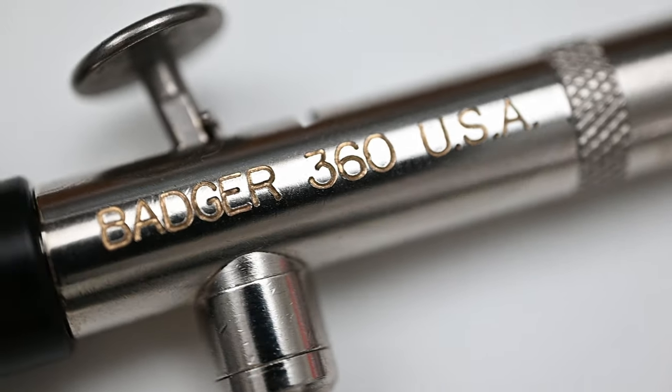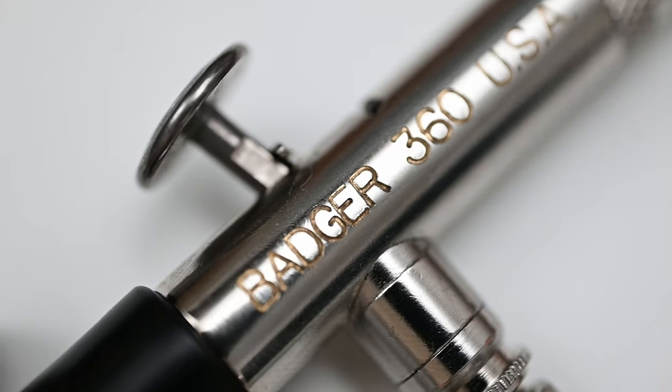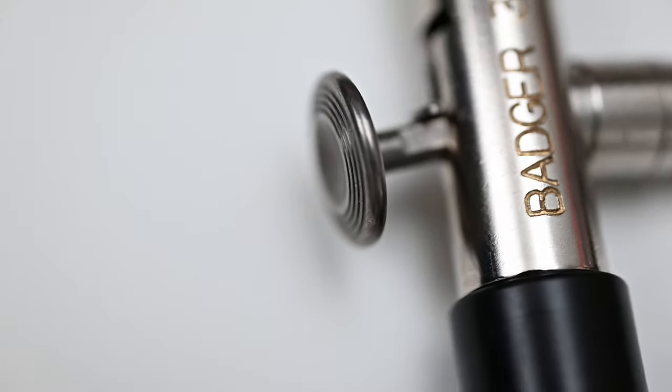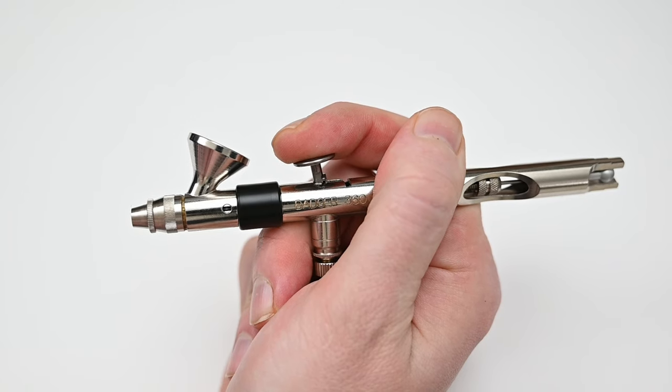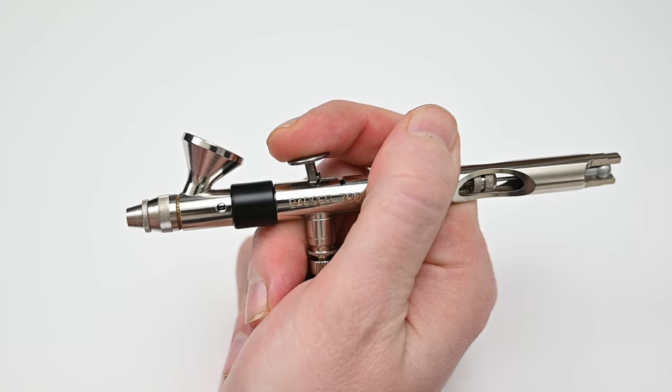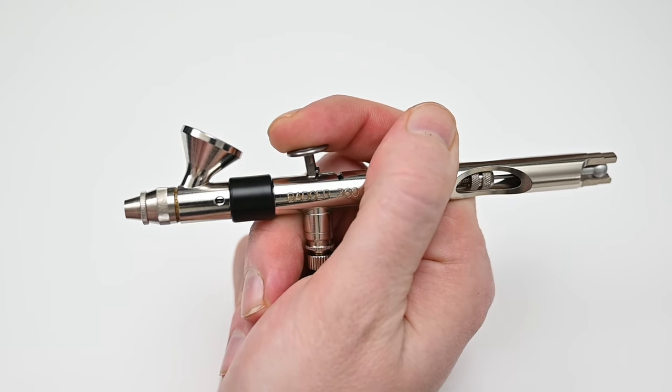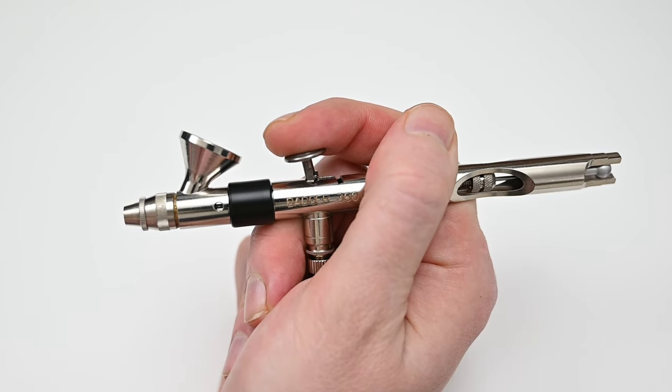But with that said, you can swap out the nozzle and needle to the smaller size, the 0.5 or the 0.3. You'll of course have to buy those separately. But if you do, you could kind of just do everything with this airbrush. You could use it for detail work using a 0.3. And then when you want to spray those wider applications, you can switch back over to the 0.7, which comes with the airbrush.